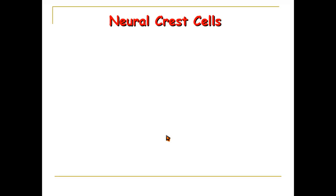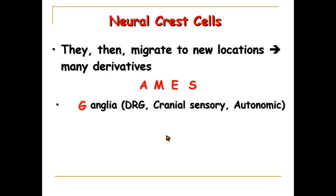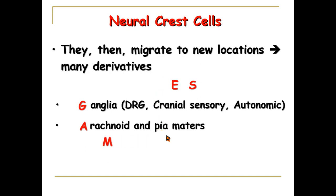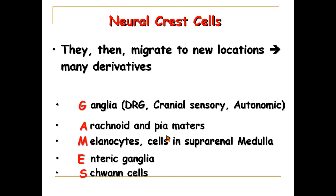What are the derivatives of the neural crest cells? We can memorize them by the word GAMES. G reminds you of the ganglia: dorsal root ganglia, cranial sensory ganglia, and autonomic ganglia. A reminds you of the two inner layers that surround the CNS. M reminds you of the melanocytes — the skin pigment-producing cells — and also the cells of the suprarenal medulla. E reminds you of the enteric ganglia. And S reminds you of the Schwann cells — the myelin-forming cells in the peripheral nervous system.